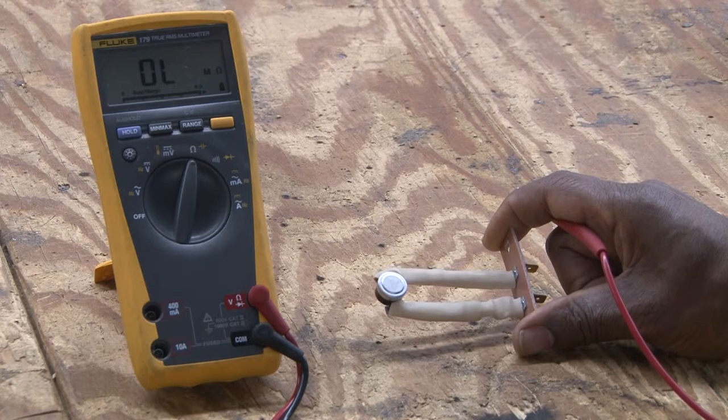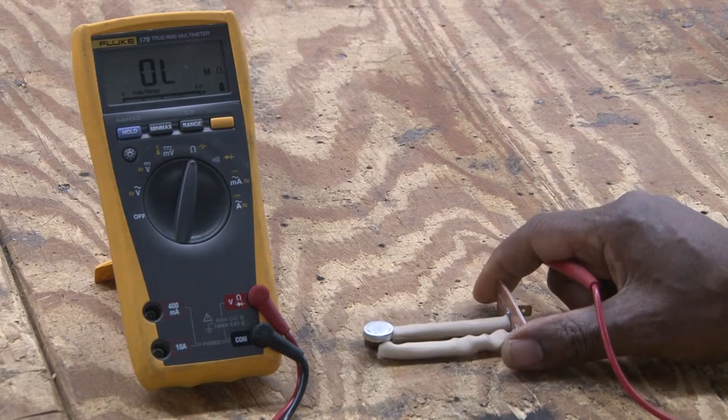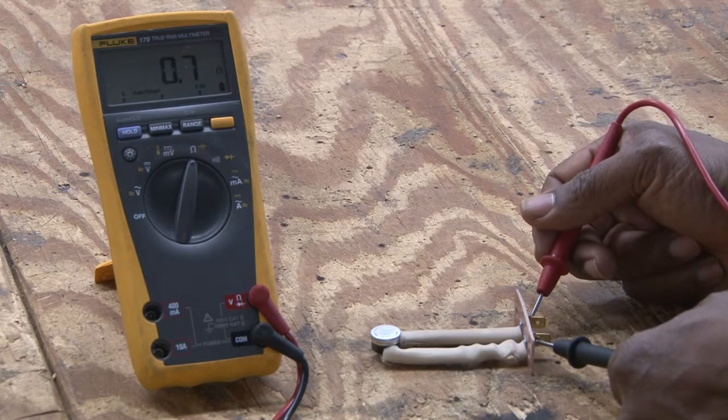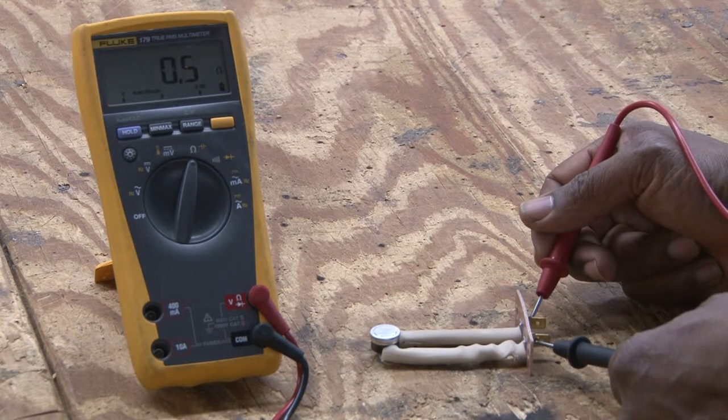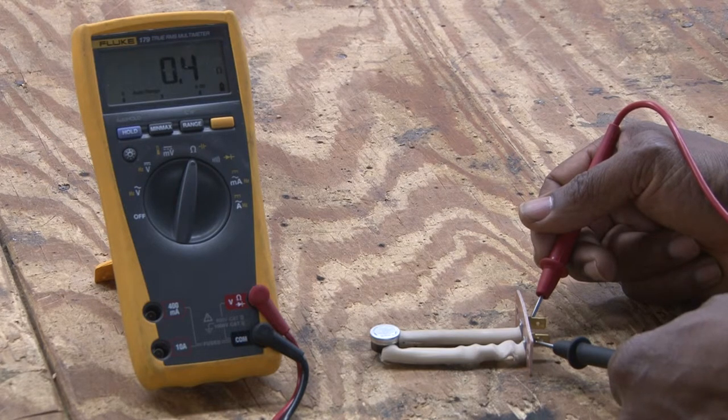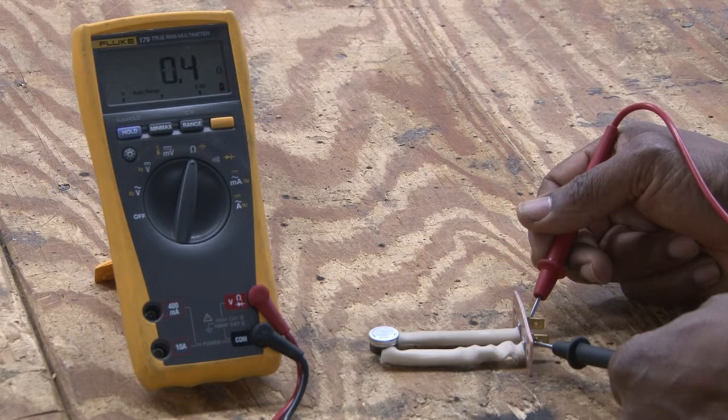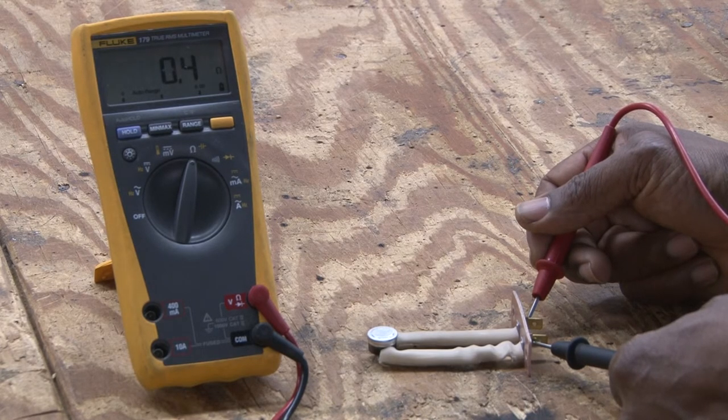So normally if it's working correctly, if you check it with an ohmmeter, it will read continuity. At this point it is closed and it's showing that this high limit is working correctly. It will open on temperature increase.